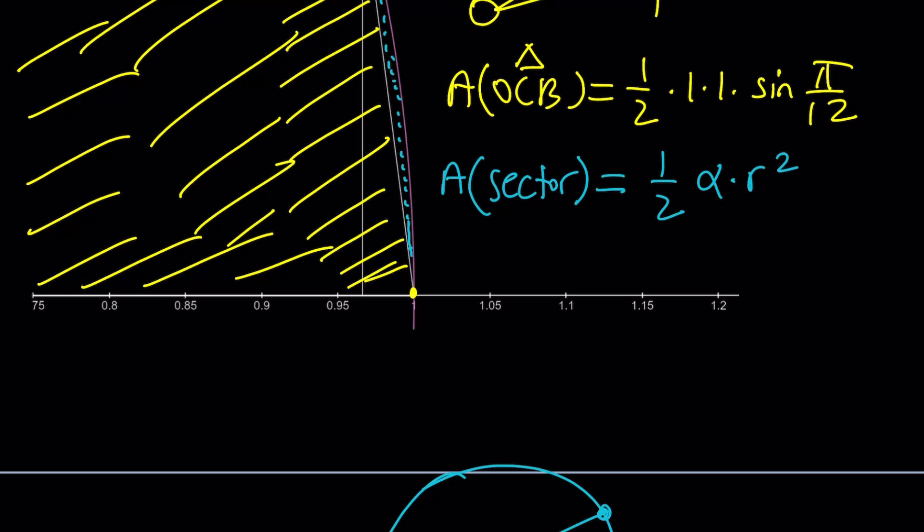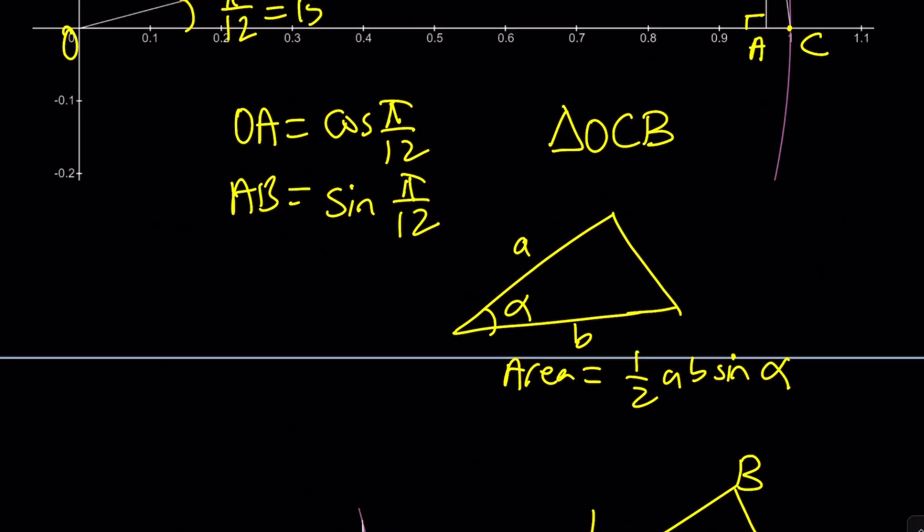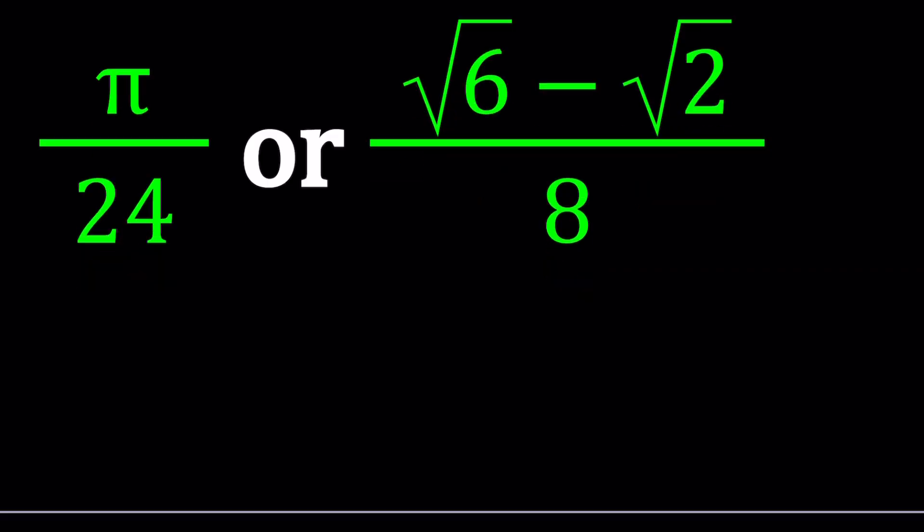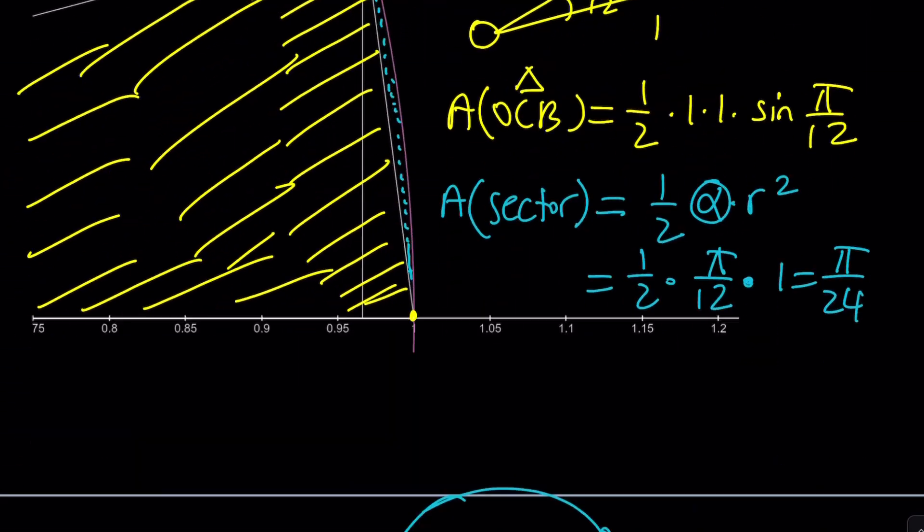So, in our case, α is π/12, right, which is 15 degrees, and r is 1 because that's a unit circle. So, the area of the sector is π/24. Uh-oh, this makes more sense, right? Because one of our numbers was π/24, remember? And the other number is √6 - √2 divided by 8. So, that better be connected to sin(π/12). And that's exactly what we're going to talk about next.